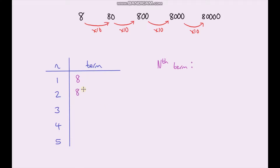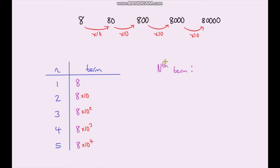The second term is 8 multiplied by 10. The third term is the second term multiplied by 10 again. The fourth term is the third term multiplied by 10, giving us 10 to the power 3. The fifth term is the fourth term multiplied by 10. So what is the nth term? We always start with 8, we always multiply by 10, and the index is always one less than the term number — so it's 8 times 10 to the power n minus 1.